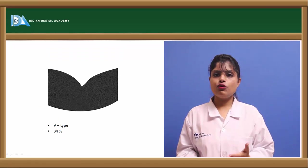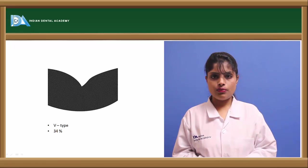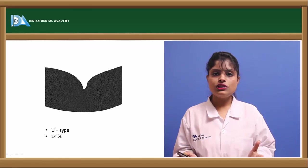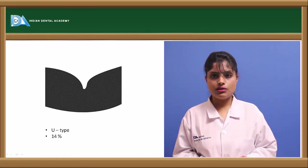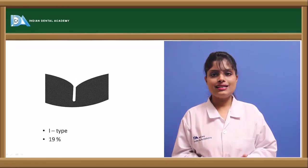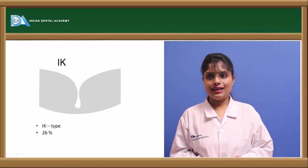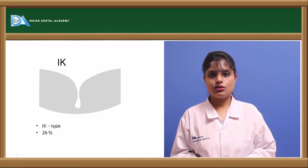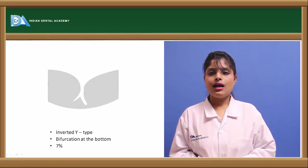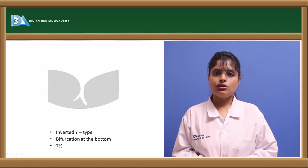The V type is 34% — it is self-cleansing, wide from the top and narrow from the bottom. The U type is again self-cleansing and generally 14% of all fissures. I is a bottle-brush type which is 19%, more caries-prone, and can be branched also. K is K-shaped and 26% of all fissures. The inverted Y is a bifurcated fissure at the bottom and 7% — it is one of the most caries-prone types of pit and fissure.